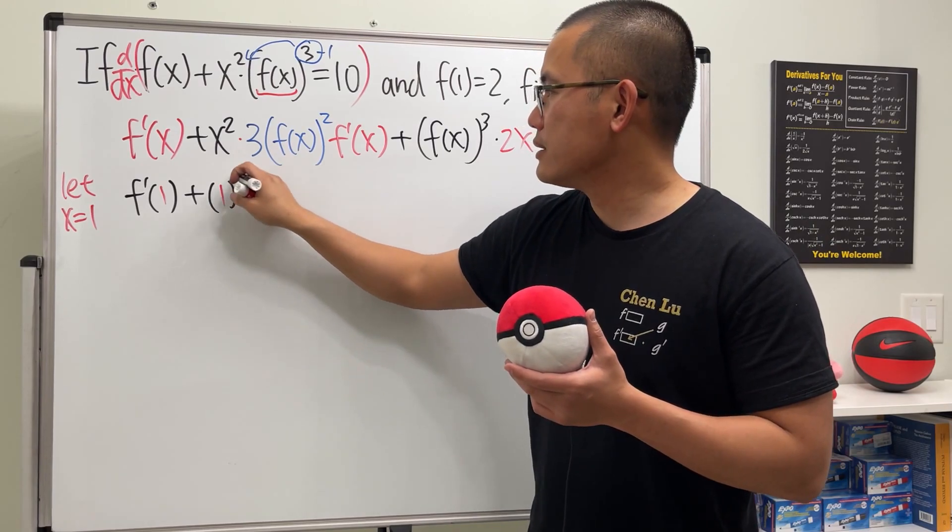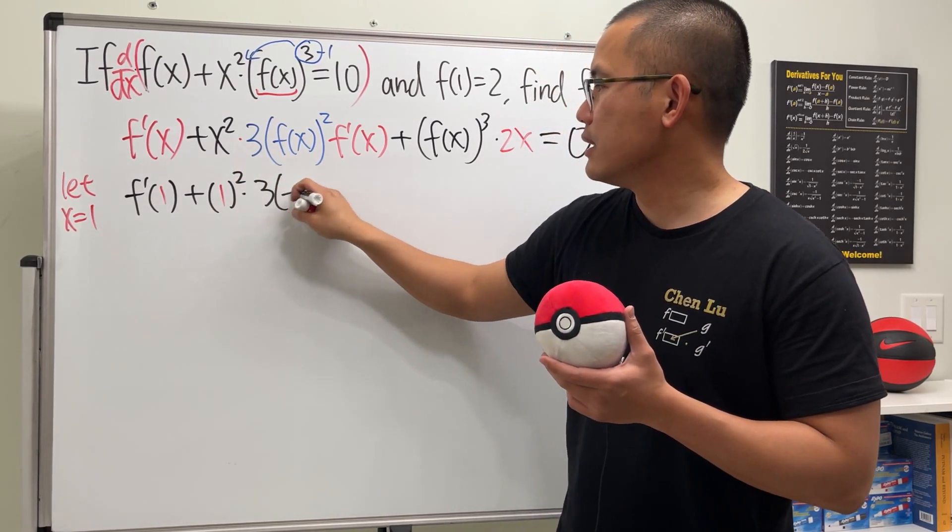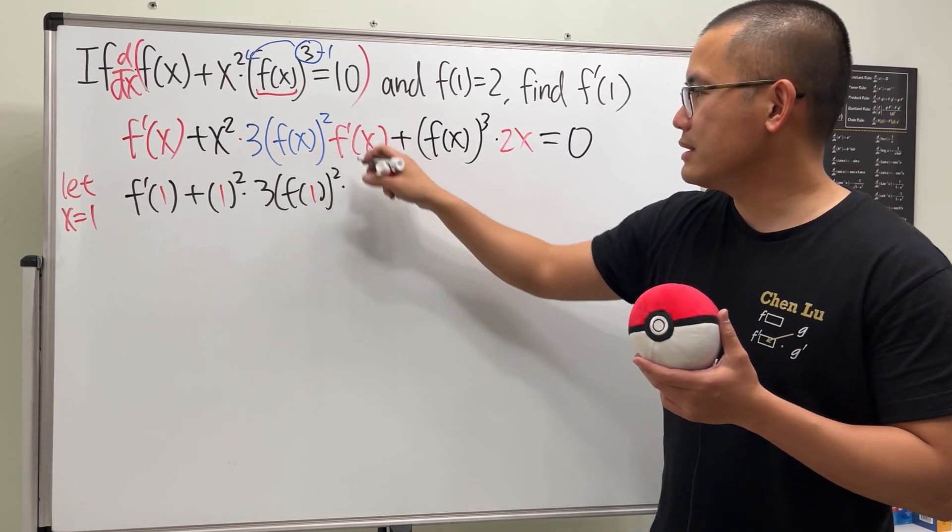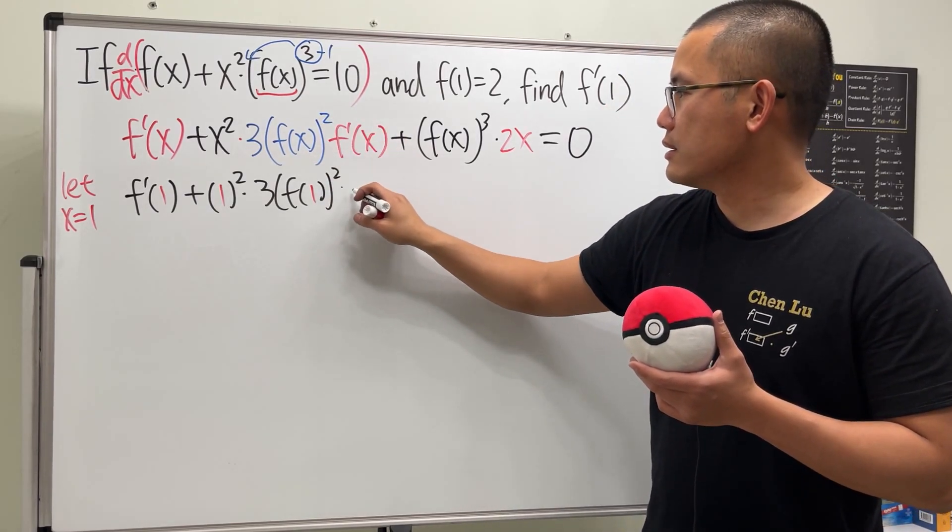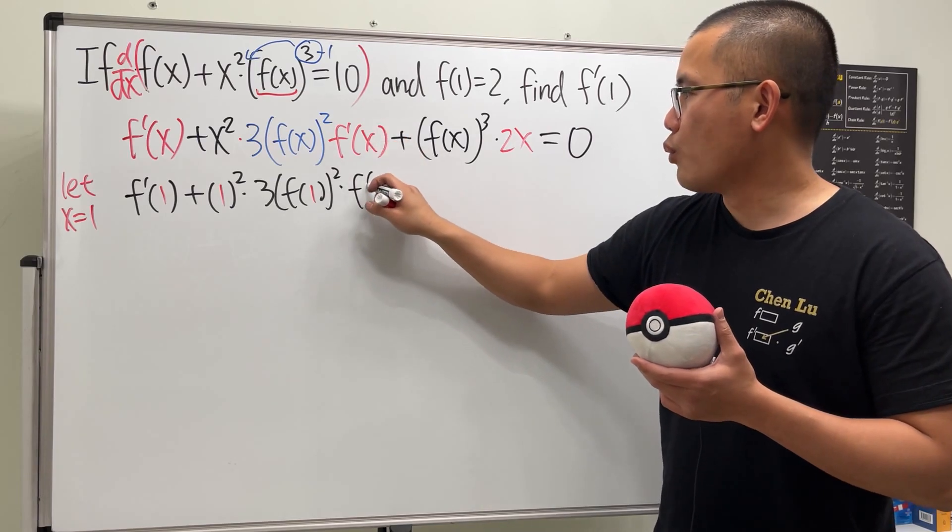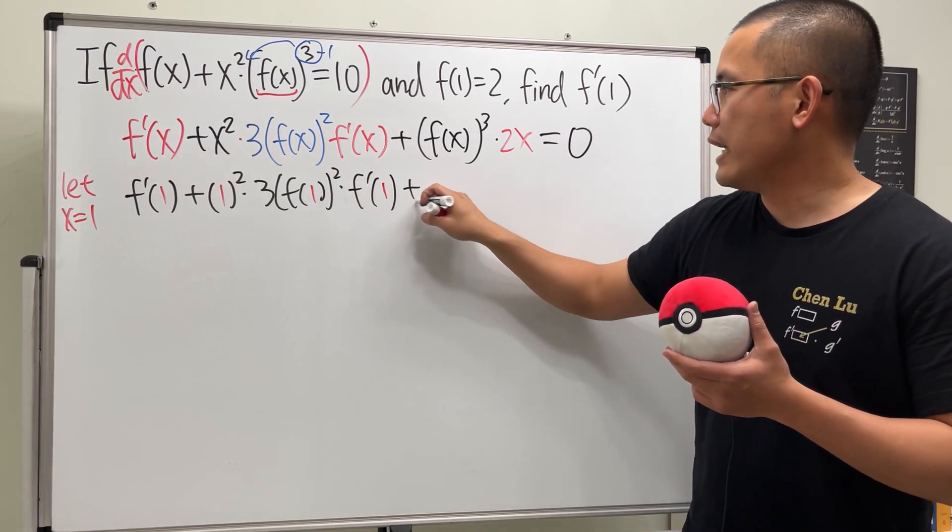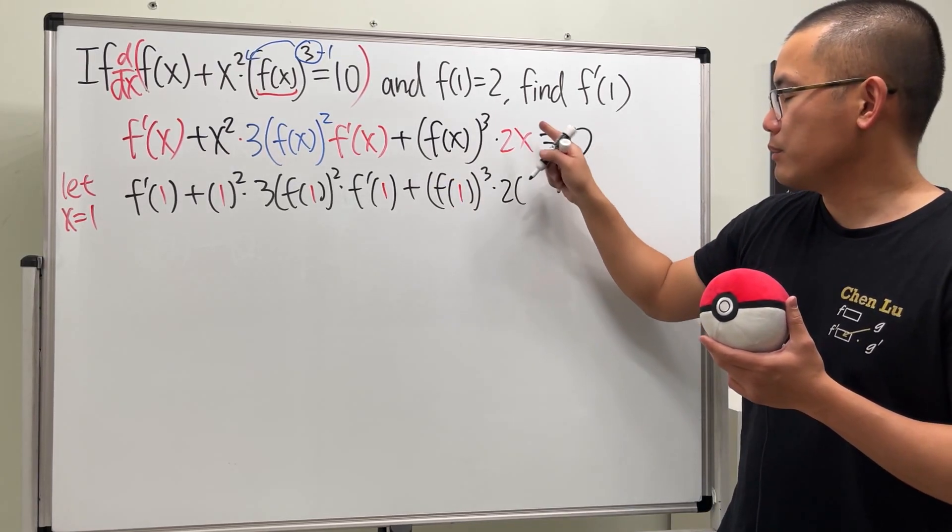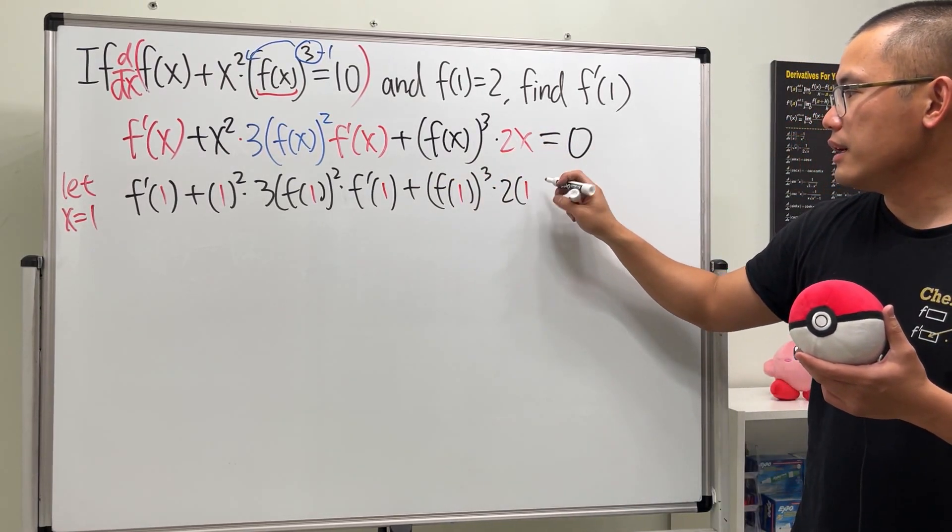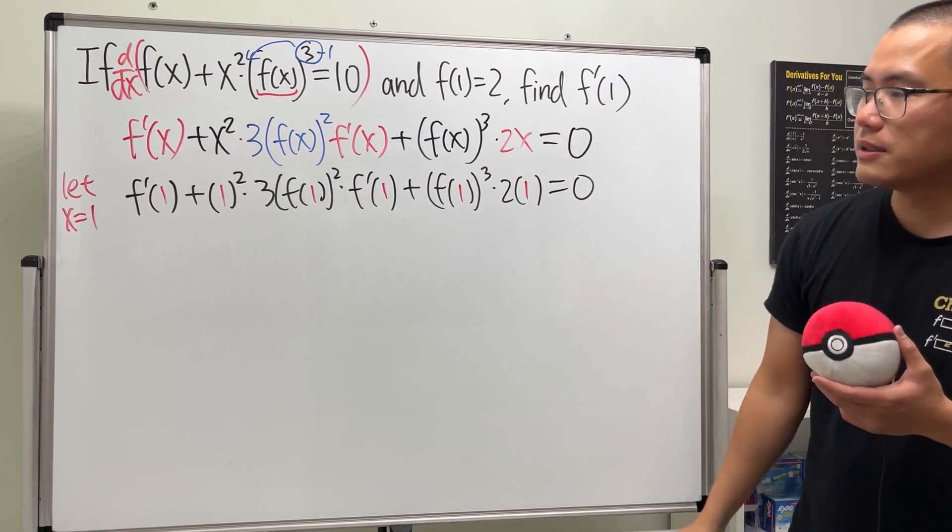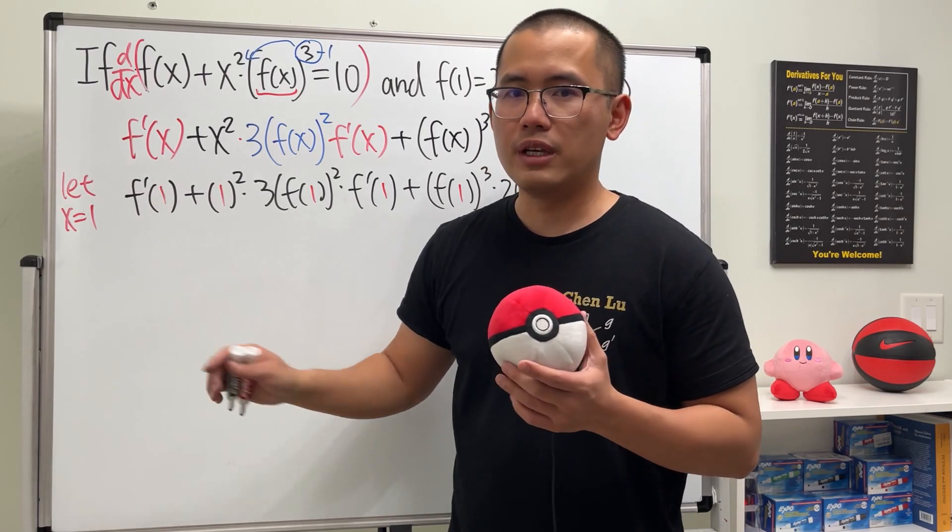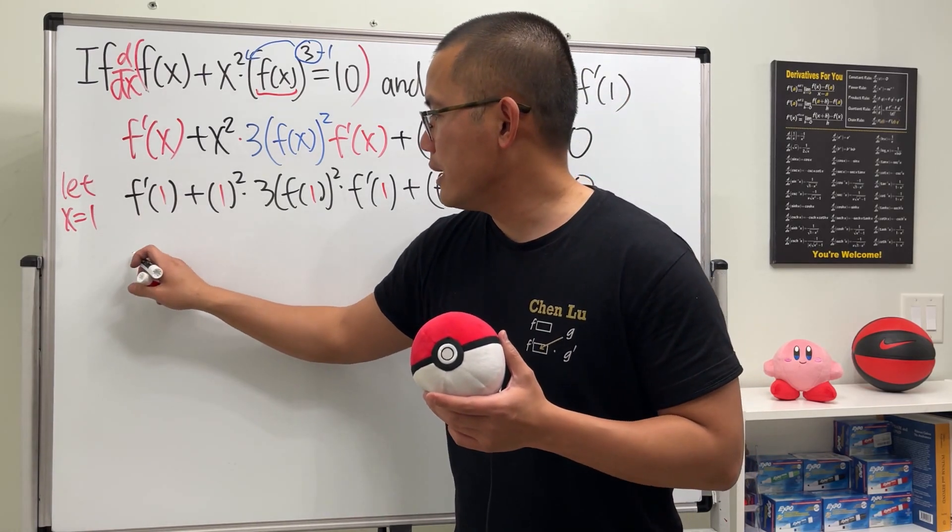So we have 1 to the second power times 3 times f of 1, and then square times, let me just write it down like this, f prime of 1, and then we add f of 1 and then to the third power, and then multiply it with 2, and also dx is 1. Okay, ladies and gentlemen, this right here we don't know yet, but don't worry, just keep it as how it is.